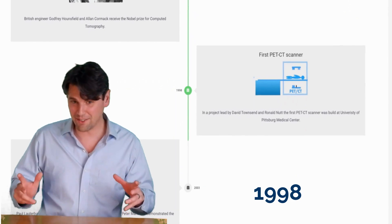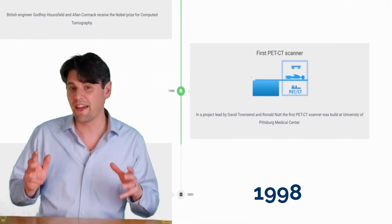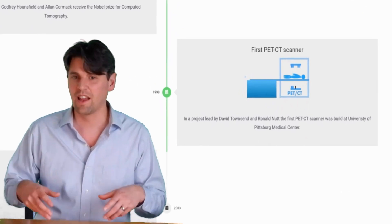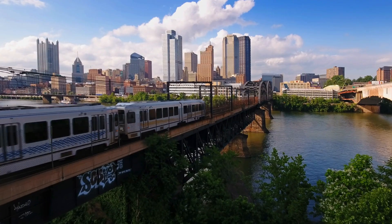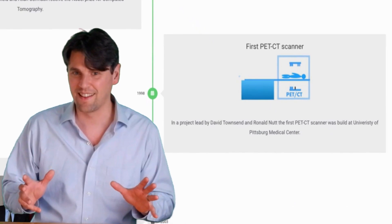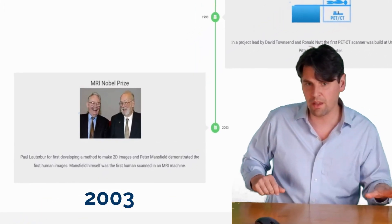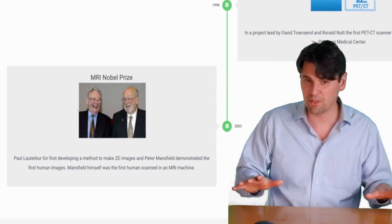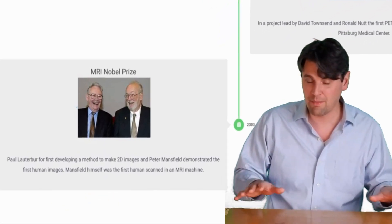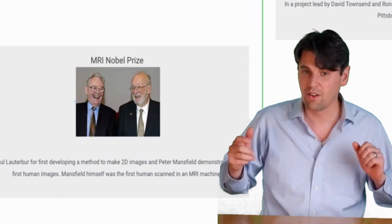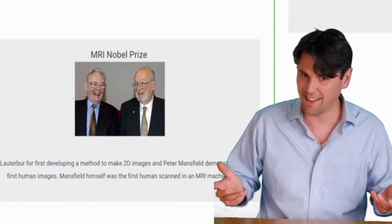Years later, when I'm ready to graduate high school in 1998, that's the year that the first PET-CT was put together at Pittsburgh by Townsend et al. 2003, Lauterbur, who demonstrated the first MRI image, and Mansfield, who demonstrated the first image of a human for MRI, were given the Nobel Prize for MRI.